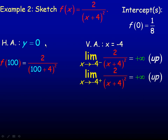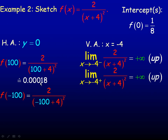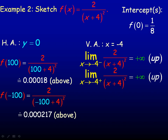To check whether the function approaches y equals 0 from above or below, we substitute a large number like 100 in place of x. In the denominator we get 104 squared, and 2 divided by that is approximately 0.00018 — a small positive value. On the left side, substituting negative 100 gives negative 96 in the brackets, but when squared it's still a large positive value, so the result is also small and positive. Therefore, in both cases, the horizontal asymptote is approached from above.